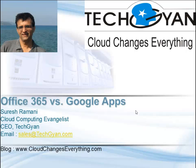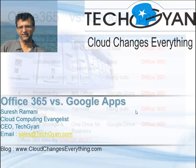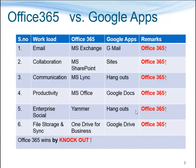Let's first check out Exchange with Gmail. Exchange has a large 50 GB mailbox. Google Apps on the other hand gives only 30 GB.